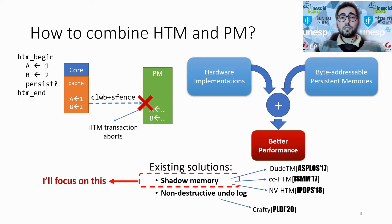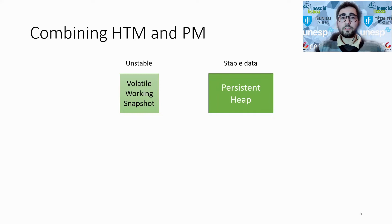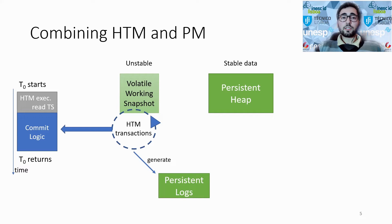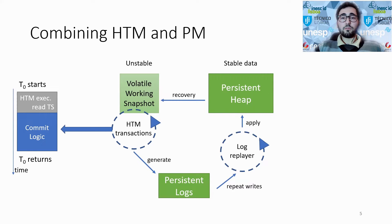In the shadow memory approach, HTM transactions access a volatile partial copy of the persistent tip. HTM transactions execute on top of volatile DRAM and generate logs in PM that contain all the modifications done to the shared state. These logs are later replayed by the log-replayer, which applies the modifications in the correct order to the persistent tip. Finally, upon recovery, the persistent tip is mapped in DRAM using, for example, the copy-on-write mechanism.